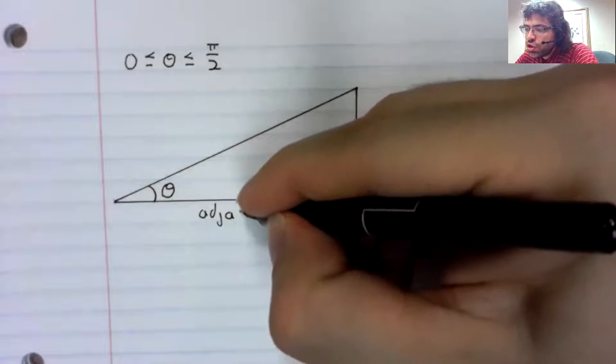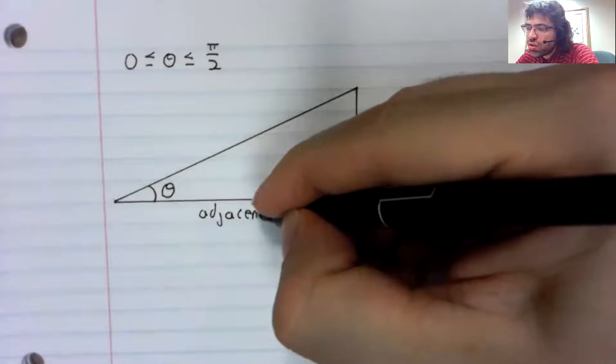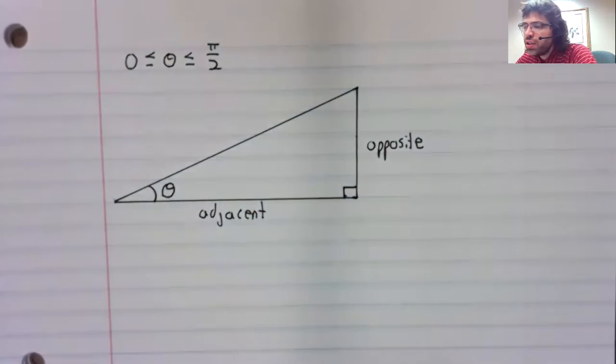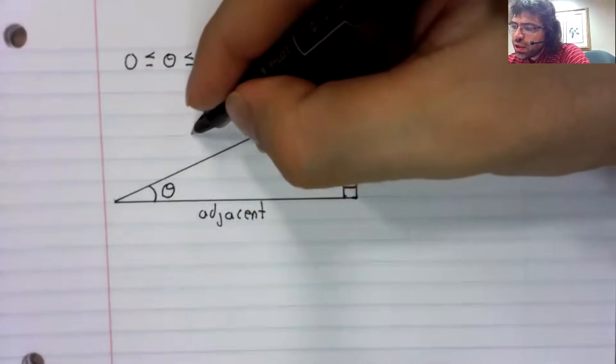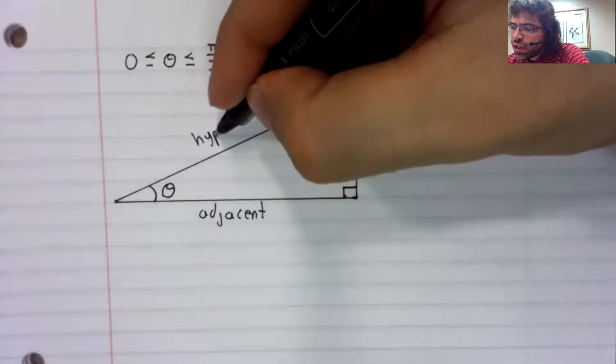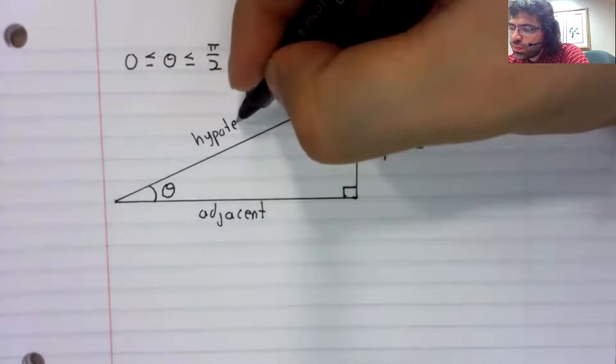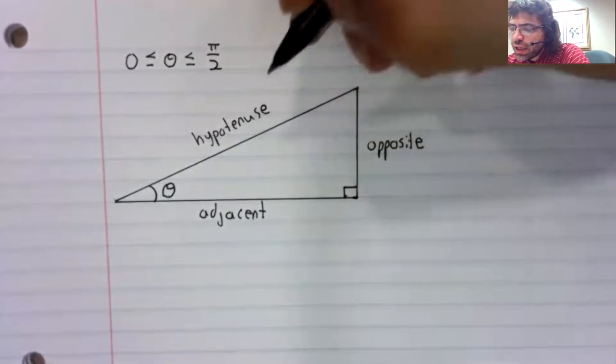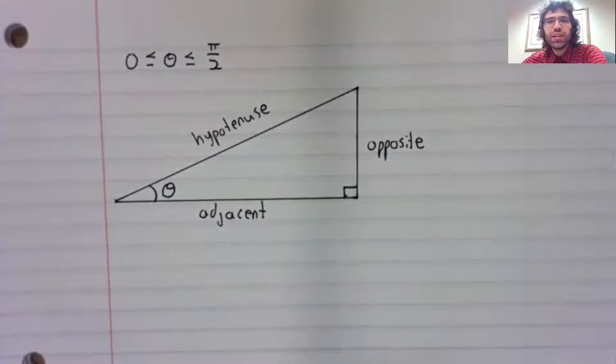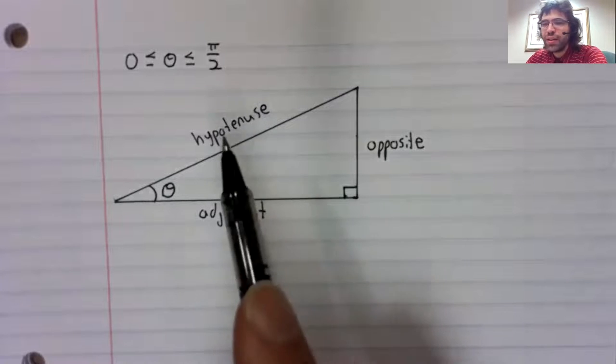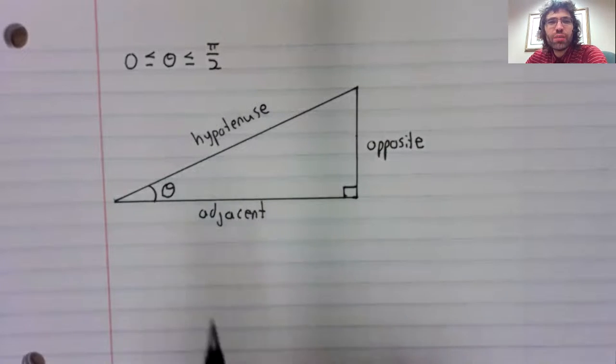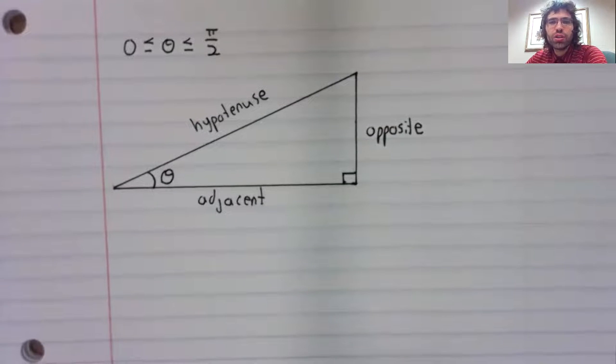The adjacent side, and then right triangles have hypotenuses, or however, whatever the plural is. So we'll label this the hypotenuse.